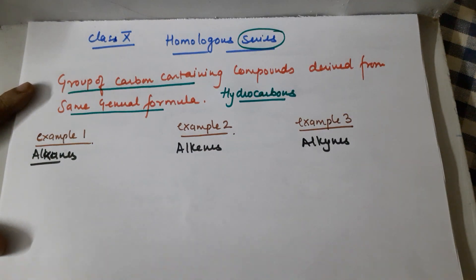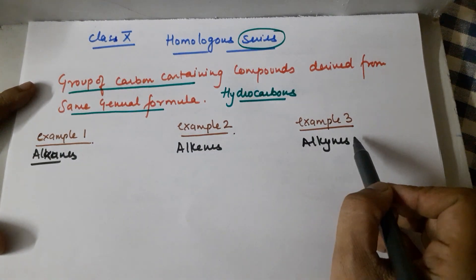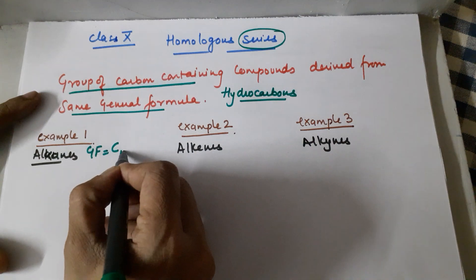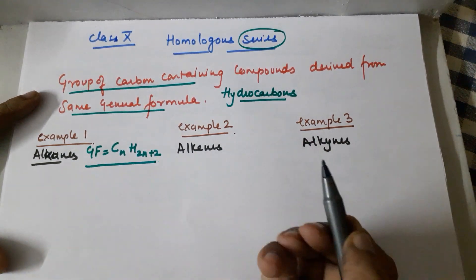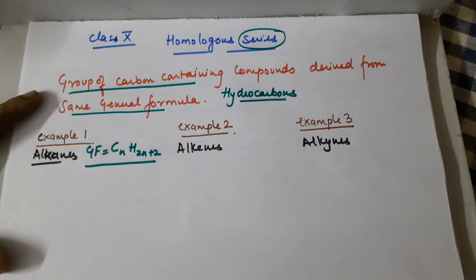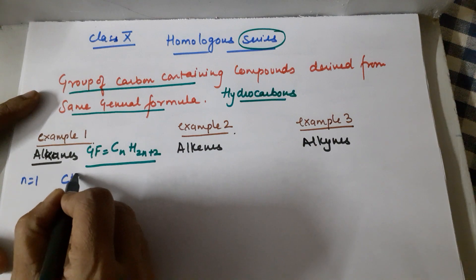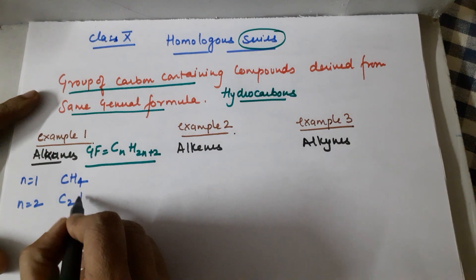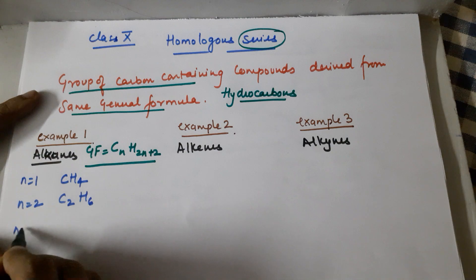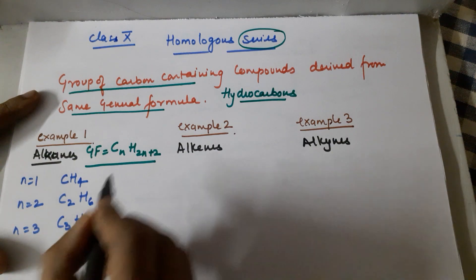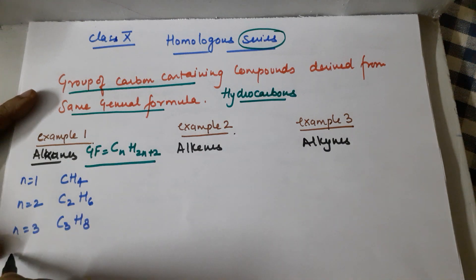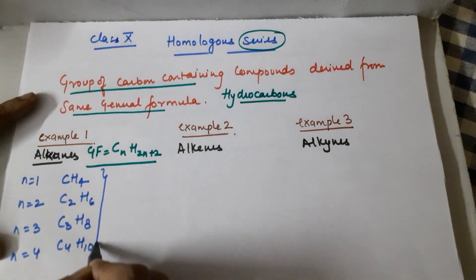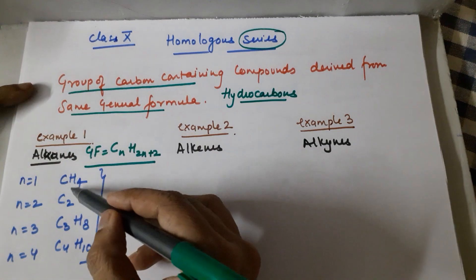Hydrocarbons are compounds of hydrogen and carbon. I am talking about alkanes, alkenes, alkynes, and their homologous series. Let's talk about alkanes. The general formula for alkanes is CₙH₂ₙ₊₂. Deriving compounds from this formula: when n=1, you get CH₄; when n=2, you get C₂H₆; when n=3, you get C₃H₈; when n=4, you get C₄H₁₀.